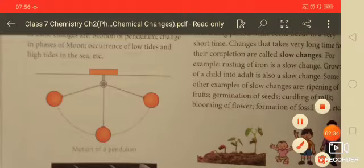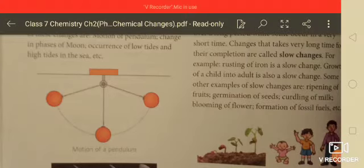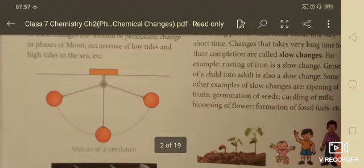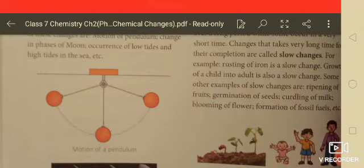Growth of a child into an adult is a slow change. Some other examples of slow changes are ripening of fruits, germination of seeds, curdling of milk, blooming of flowers, and formation of fossil fuels.